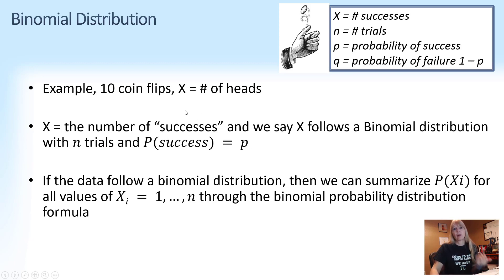And since I can only get either a heads or a tail, in this case we know this would be a binomial. And then we just continue to do this. We repeat this experiment until finally we get through the 10 coin flips.